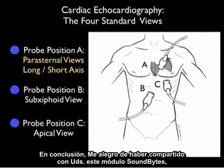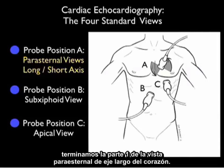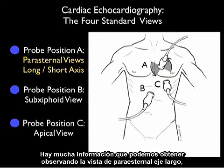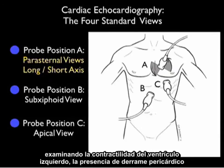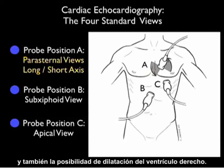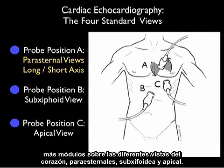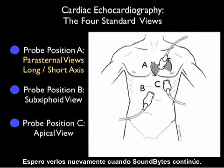In conclusion, I'm glad I could share with you this SoundBytes module going over part one, the parasternal long axis view of the heart. There's a great deal of information that we can gain by looking at the parasternal long axis view, including left ventricular contractility, the presence of a pericardial effusion, and the possibility of right ventricular strain. I hope to see you back in the future as we cover further modules going over the parasternal views, the subxiphoid views, and the apical views. I'll see you back as SoundBytes Cases continues.